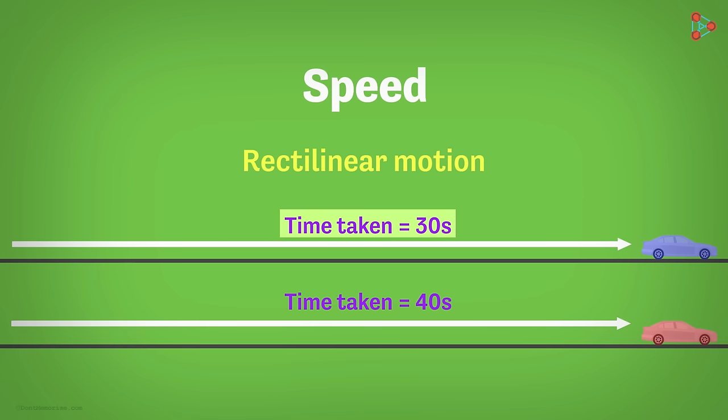The blue car covered the path length in 30 seconds, while the red car covered the same path length in 40 seconds. Which one of them was moving with greater speed?